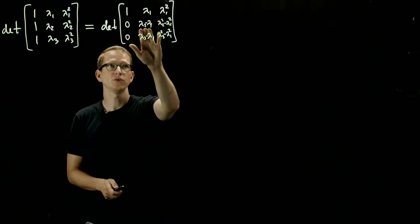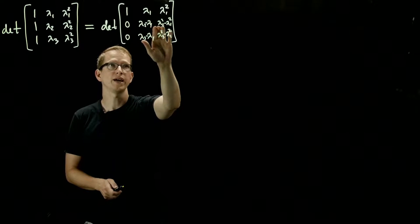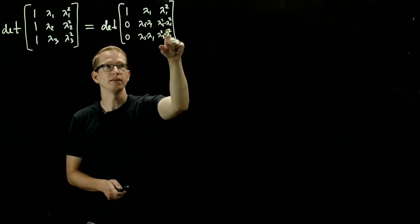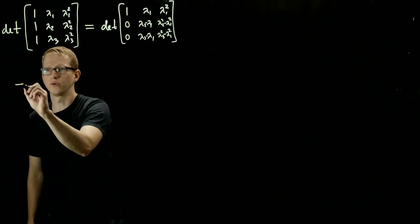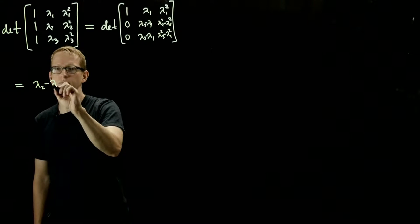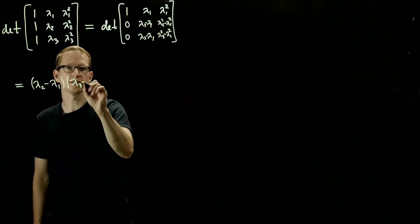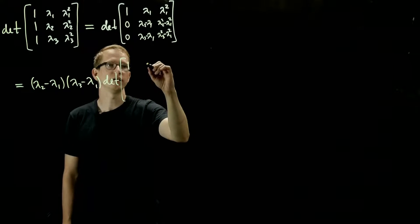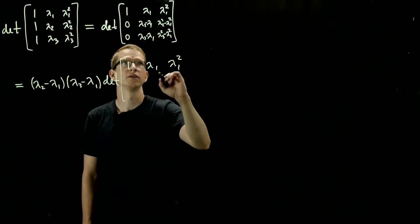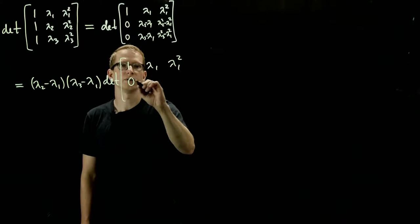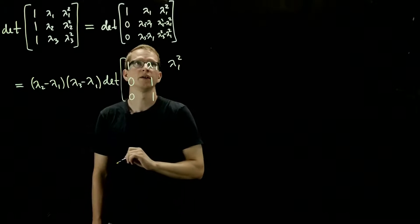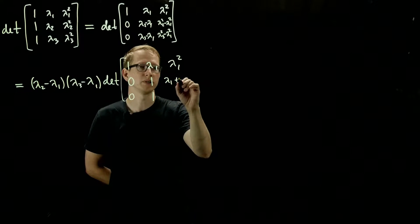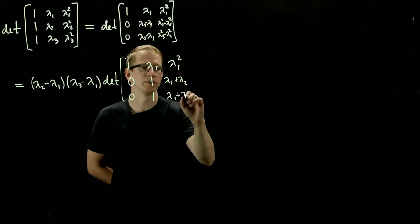Now, lambda_2 minus lambda_1 is actually a common factor in this second row, because this becomes lambda_2 plus lambda_1 when we pull that out, and this is lambda_3 plus lambda_1. So when we distribute out, we get lambda_2 minus lambda_1, lambda_3 minus lambda_1, times the determinant of what's left over, which is 1, lambda_1, lambda_1 squared; 0, 1, 0; 1, lambda_1 plus lambda_2, lambda_1 plus lambda_3.